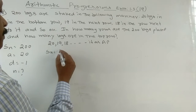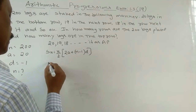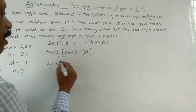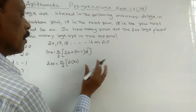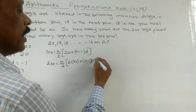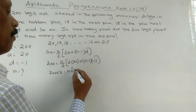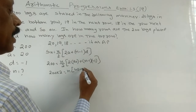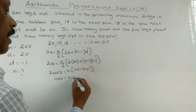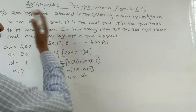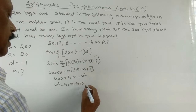The total logs are 200, so Sn = 200. Using the formula Sn = n/2 × (2a + (n−1)d): 200 = n/2 × (2×20 + (n−1)×(−1)), which simplifies to 400 = n × (40 − n + 1) = n × (41 − n). Rearranging: n² − 41n + 400 = 0.